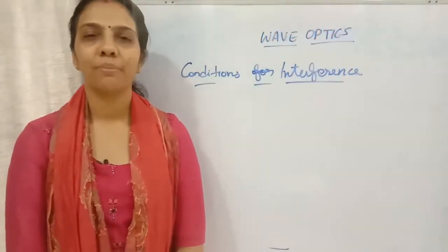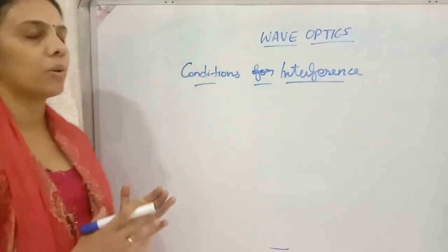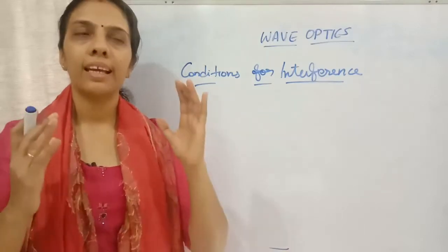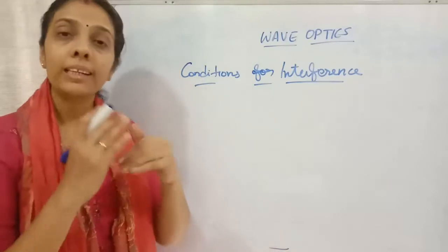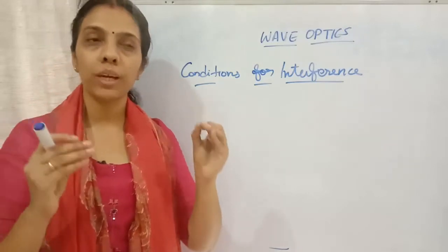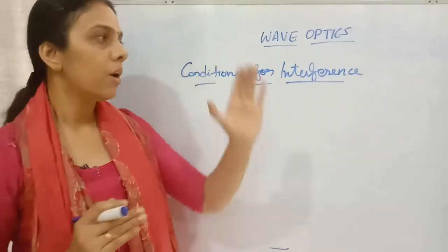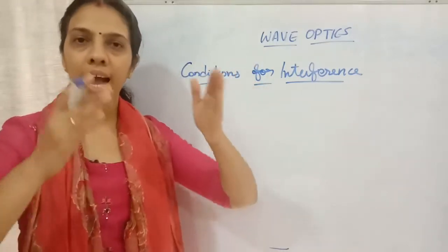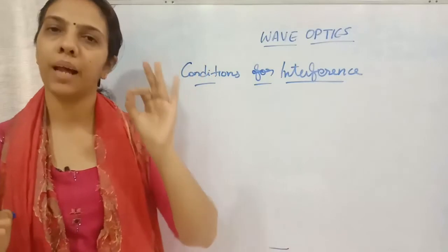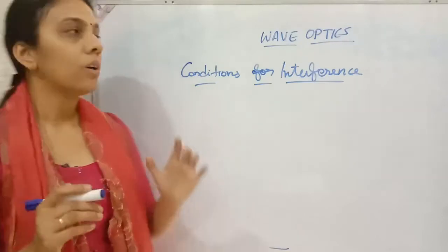Hello, dear students, welcome back to Learn Physics. In today's video we are going to discuss about the conditions for interference. In the last class we learned about what is meant by interference — interference is the redistribution of energy. When two or more waves are superposing each other, the energy will be redistributed such that at one point we get maximum brightness, then dark, then maximum, then dark — alternate dark and bright fringes. That phenomenon is called interference.